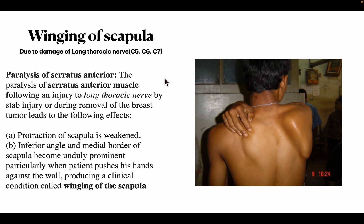One more clinical condition is winging of scapula, caused by damage to the long thoracic nerve, also known as the nerve of Bell or nerve to serratus anterior, with root values C5, C6, and C7. Paralysis of the serratus anterior occurs due to injury from stab wounds or during removal of a breast tumor. As a result, the inferior angle and medial border of the scapula become prominent when the patient tries to push against a wall, producing winging of the scapula.